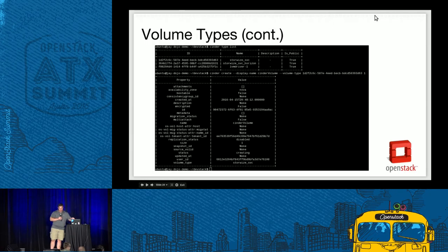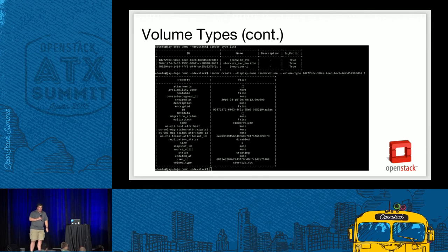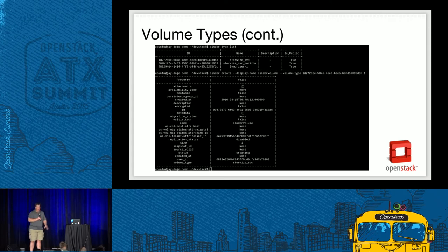With the type created and the backend configured with the extra spec, now it's time to create a volume. Use 'cinder create', specify the volume type you want using the type name in Horizon or the key in CLI, give it a size, and it creates the volume and sends it to the appropriate storage for the chosen volume type.